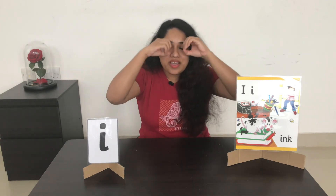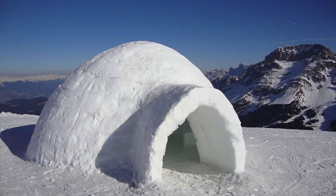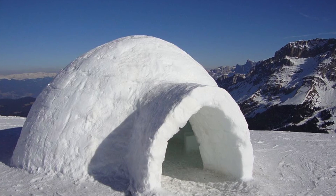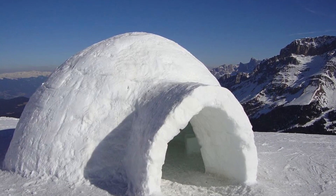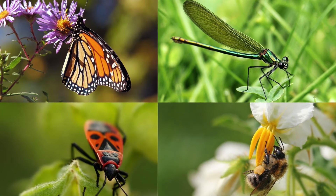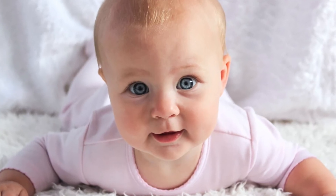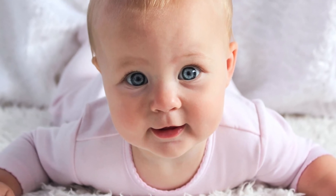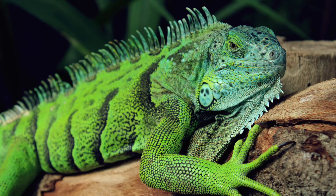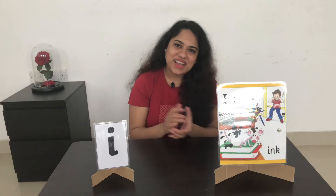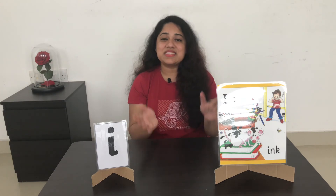Put your looking eyes on! Are you ready to look at some pictures that begin with the letter sound I? Let's have a look. I for igloo — an igloo is a house made of snow. I for insects. I for infant — infant is another name for baby. I for iguana!